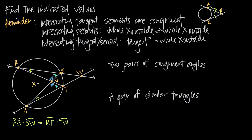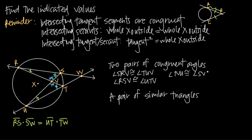So if we want to identify two pairs of congruent angles, we can say that angle SRV is congruent to angle TUV. We can also identify angle RSV as congruent to angle UTV. There are actually other congruent angles in this figure, which we'll see when we discuss similar triangles further.